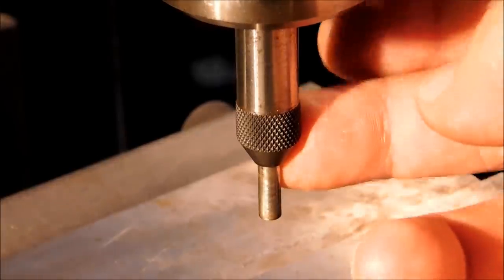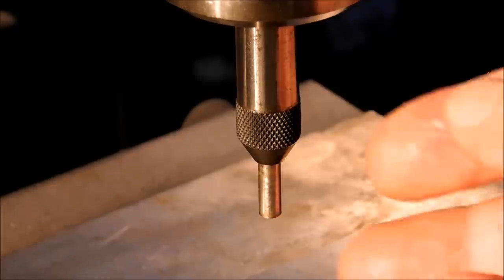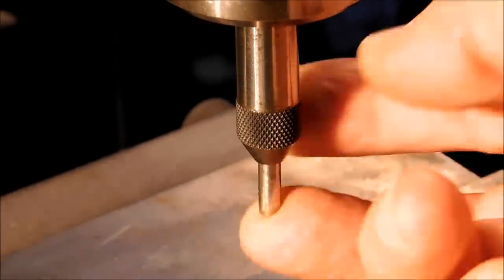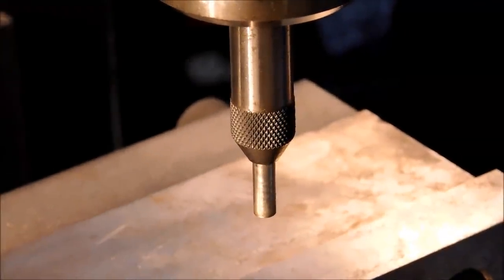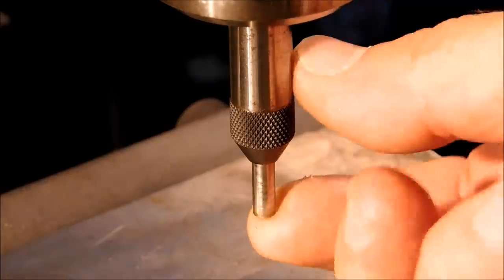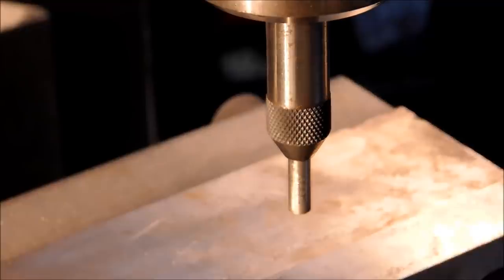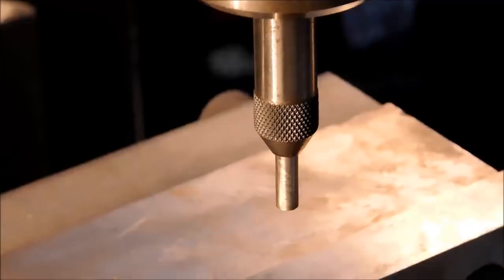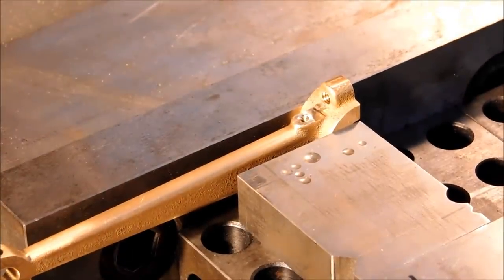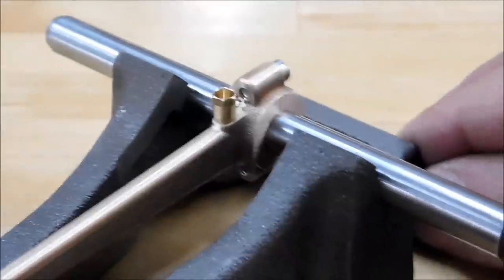If you do buy or own one of these tap guides, do yourself a favor and keep a variety of springs available to regulate the pressure on here. For a small tap like 256 going into a piece of brass or aluminum, you're not going to want the same pressure that you're going to use for half 13 with a piece of steel. So keep an assortment of springs and keep them handy and make sure you use the correct one.